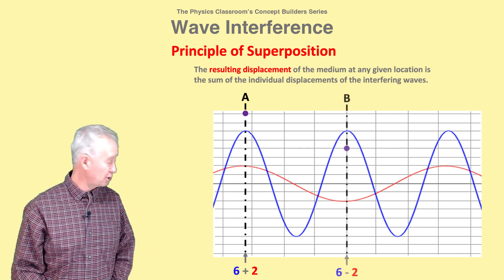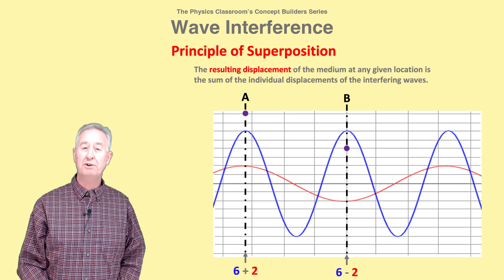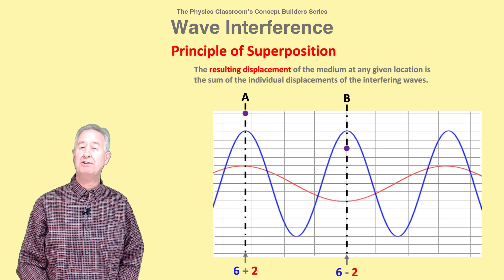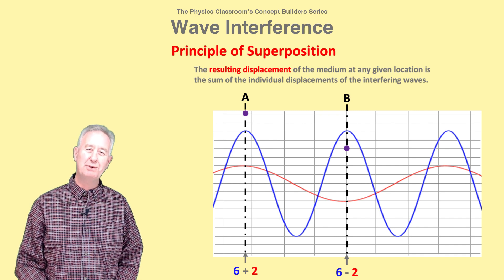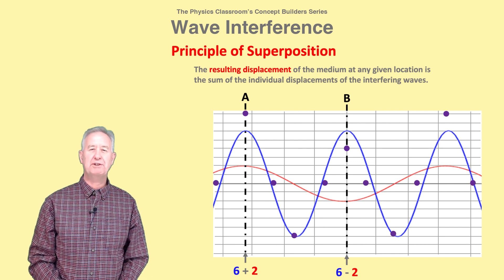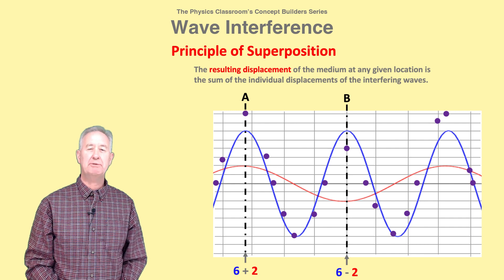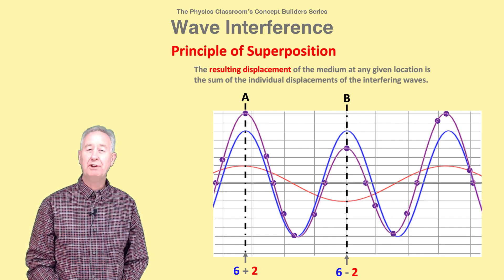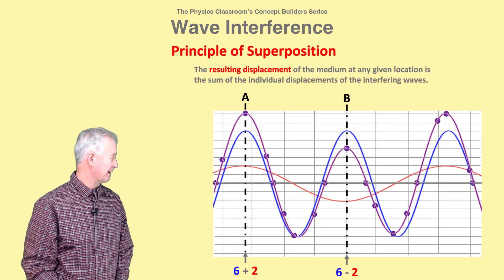By applying the principle of superposition to several locations along the medium, you can determine the displacement at each location and the shape of the resultant wave at that moment in time. This is shown in the diagram.